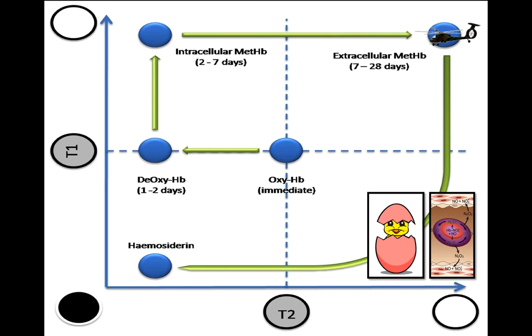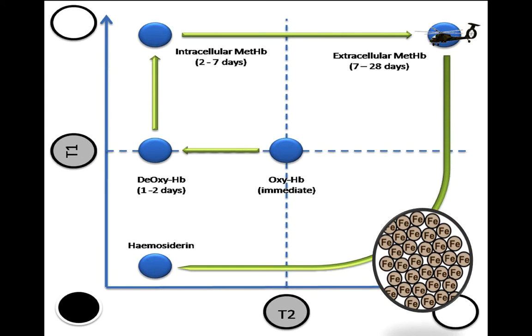Once methemoglobin is extracellular, it will be hyperintense in both T1 and T2. As for the ferromagnetic substance — hemosiderin — it is strongly influenced by the external magnetic field, so it will be hypointense in both T1 and T2. This graph is very important; if you can remember it, you can easily stage the different stages of hemorrhage.